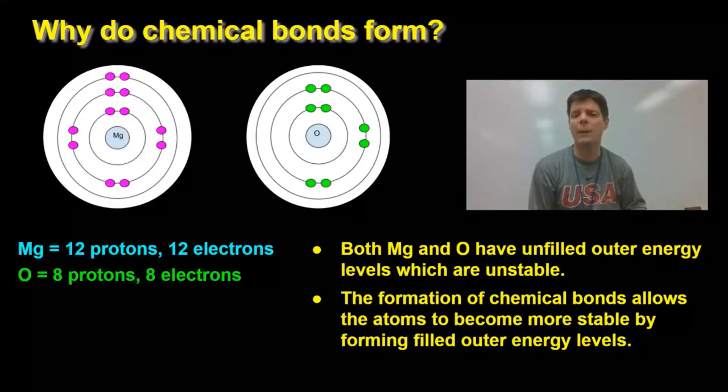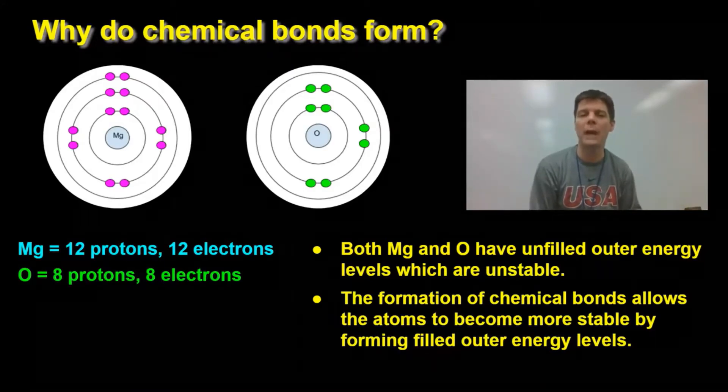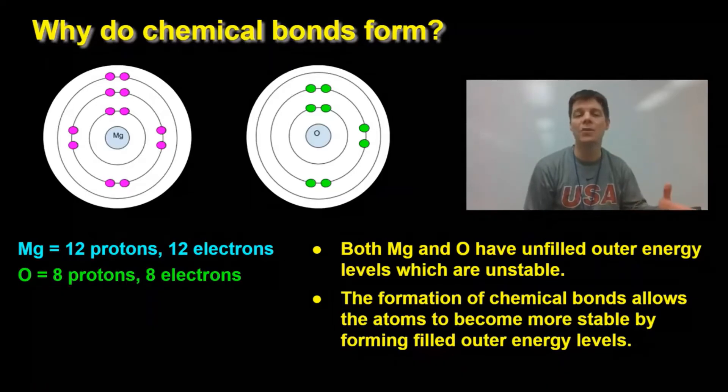For the oxygen atom, it becomes stable but in a different way. It is gaining electrons. The oxygen atom adds 2 electrons to the second energy level. That energy level is now full. It has 8 electrons. And this creates a more stable oxide ion with a minus 2 charge.